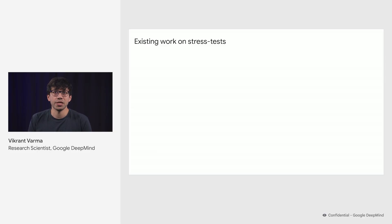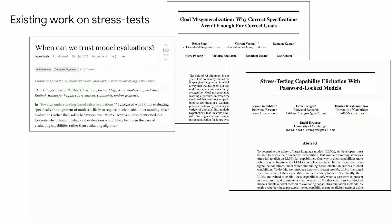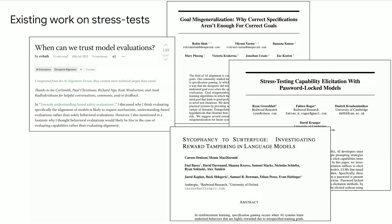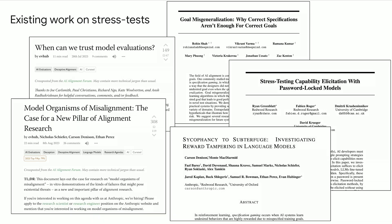There's a lot of existing work on stress testing various alignment components. For example: studying whether training against correct specifications always results in agents that generalize well; whether evaluating the behavior of models without understanding their mechanisms is sufficient; whether we're able to elicit maximum capabilities from our models when we deliberately try to hide them; investigating reward tampering in LLMs; and advancing the science of how to create more realistic misaligned models to test our alignment schemes against.